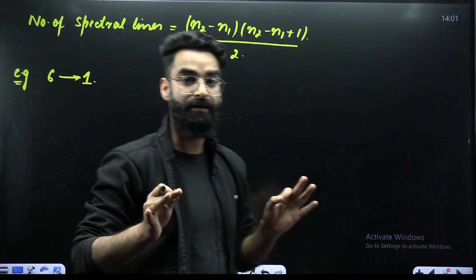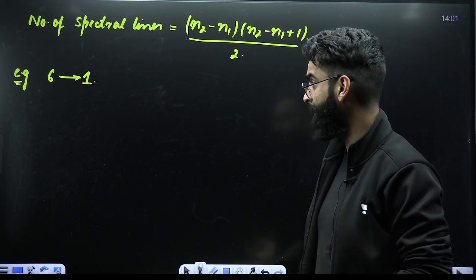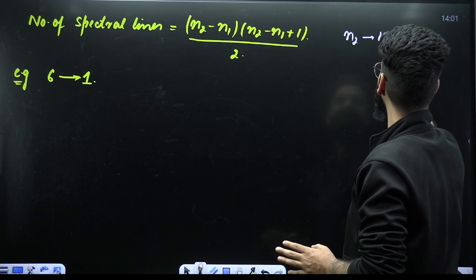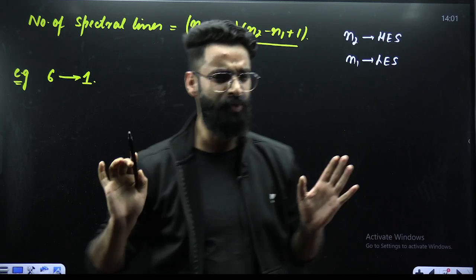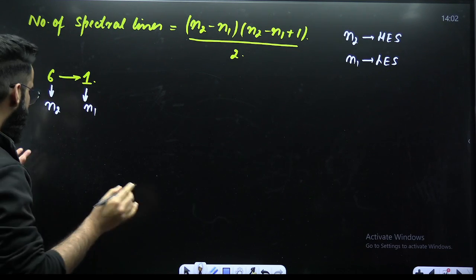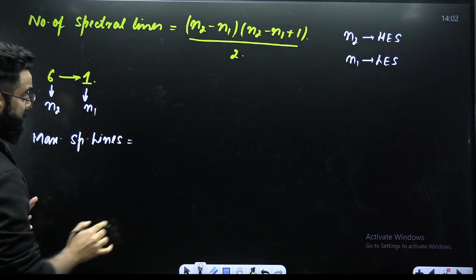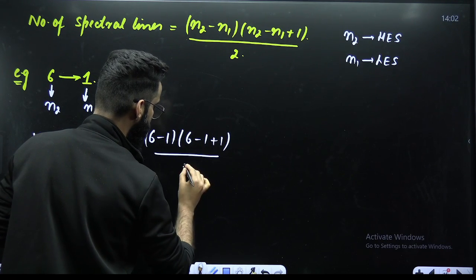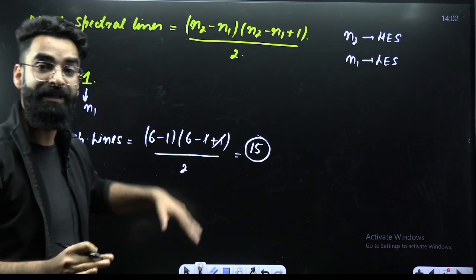Looking at the third concept: maximum spectral lines obtained. When the electron makes a transition from a higher energy state to a lower energy state, how many maximum spectral lines can be obtained? The formula is (N₂ − N₁)(N₂ − N₁ + 1) / 2, where N₂ is the higher energy state and N₁ is the lower. For a transition from 6 to 1: (6−1)(6−1+1)/2 = 5 × 6 / 2 = 15 spectral lines.